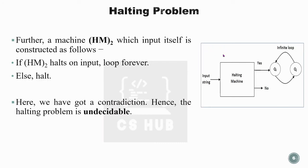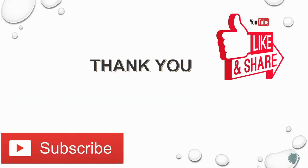Finally, when we feed HM' its own description as input, we reach a contradiction: if it halts, it must loop forever, and if it loops forever, it must halt. This contradiction proves that no such halting machine can exist, and therefore the halting problem is undecidable. That is the halting problem concept and proof.